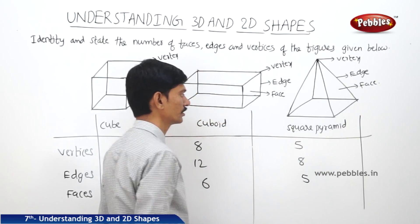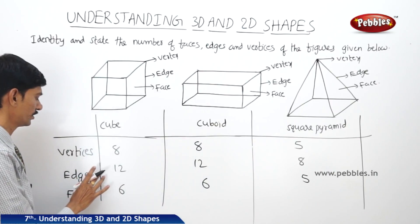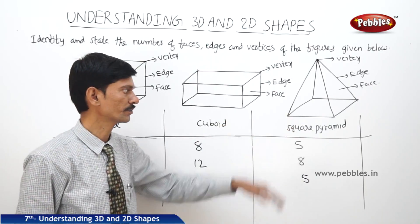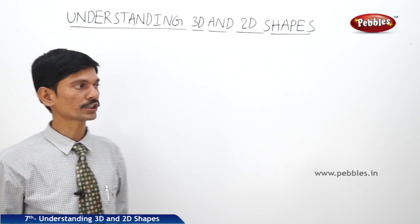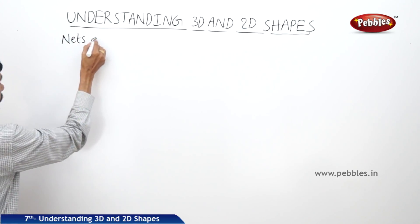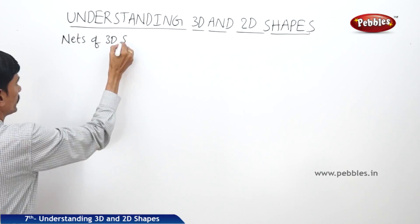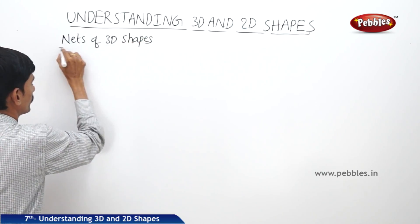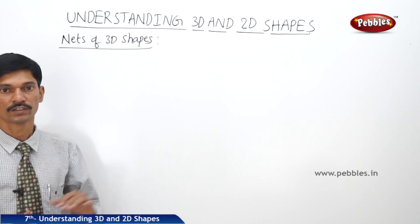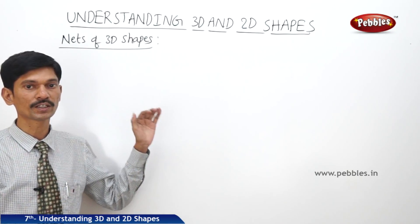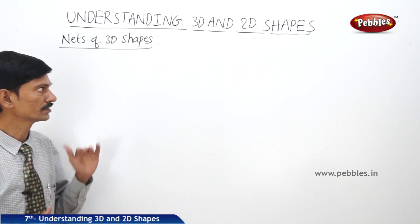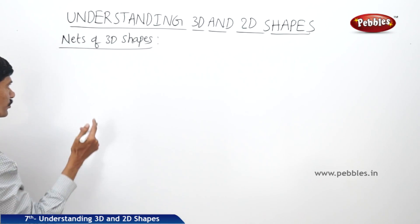So this is the number of vertices, edges, and faces of different solid shapes: cube, cuboid, and square pyramid. Now let's see the next topic — the nets of 3D shapes. How do we visualize 3D shapes on flat surfaces? We draw the nets of the 3D figures.